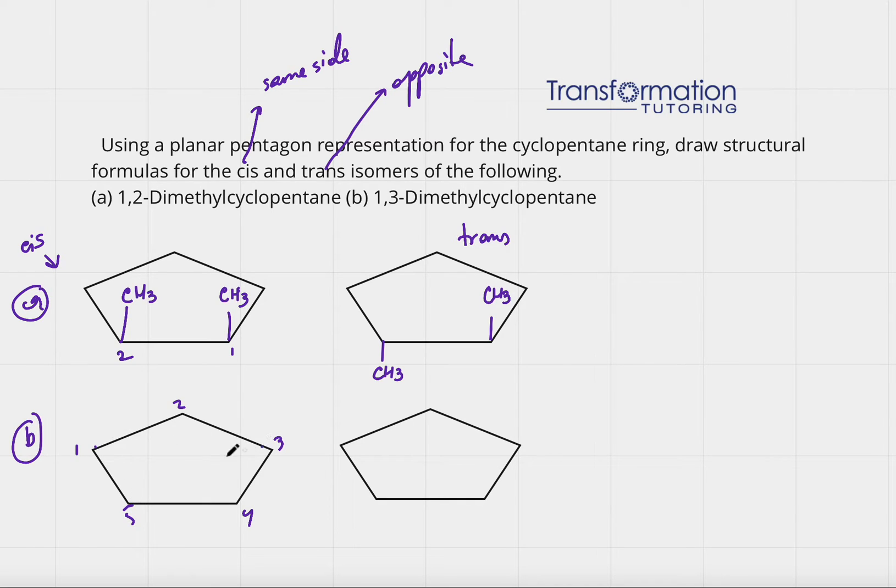So we have 1,3. And let's draw cis-dimethylcyclopentane. So cis means again on the same side. So either both of them up or down. I'm going to draw both of them up. So on the carbon number 1, my CH3 group is up. And on carbon number 3, my CH3 group is up as well. So this is cis isomer of 1,3-dimethylcyclopentane.